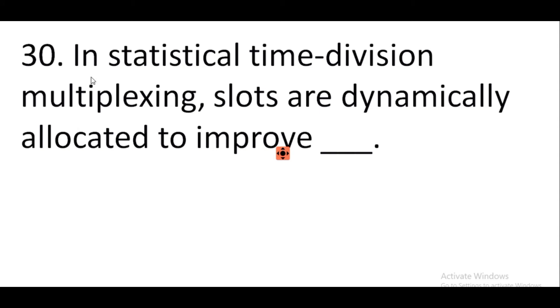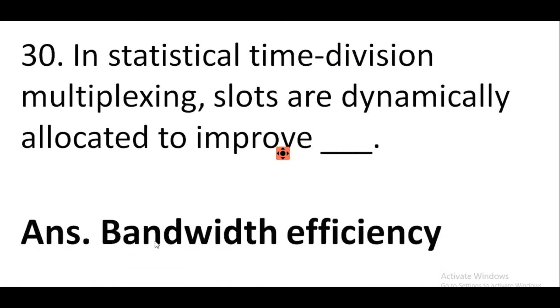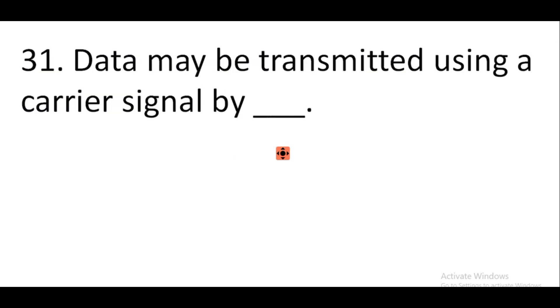Question number 30: In statistical time division multiplexing, slots are dynamically allocated to improve bandwidth efficiency. Question number 31: Data may be transmitted using a carrier signal by modulation.